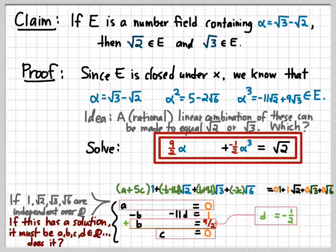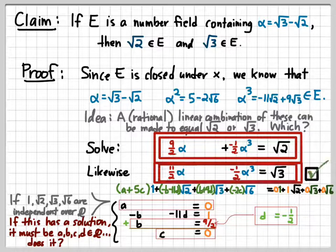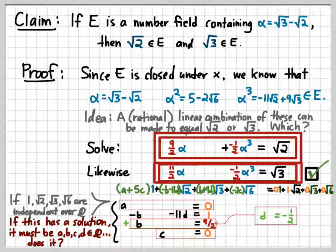The same logic can also be used to solve the corresponding system of equations, which proves that 11/2 α - 1/2 α³ = √3, and therefore the square root of 3 must also belong to E. So surprise, surprise, we can't have √3 - √2 in a field unless we have √2 and √3 individually in that field.